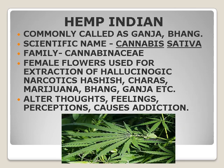Hemp Indian. Commonly called as Ganja or Bhang. Scientific name is Cannabis sativa. It belongs to the family Cannabinaceae. The female flower is used for extraction of hallucinogenic narcotics. It alters thoughts, feelings and perceptions and causes addiction.